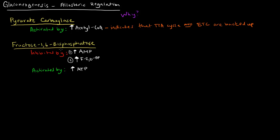Now what about fructose-1,6-bisphosphatase? It has two allosteric inhibitors, the first one being high levels of AMP.